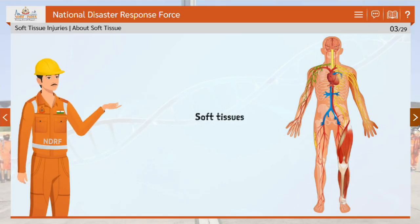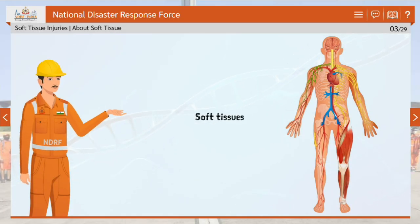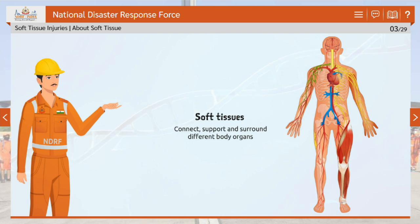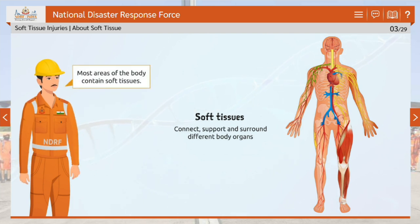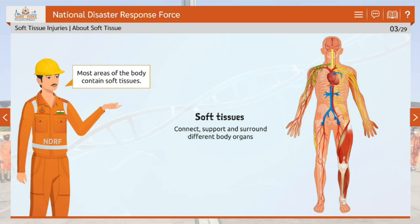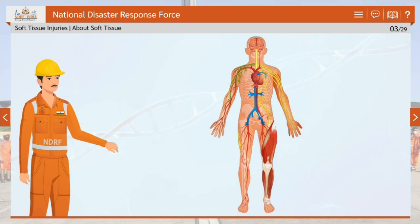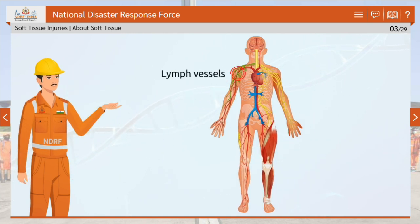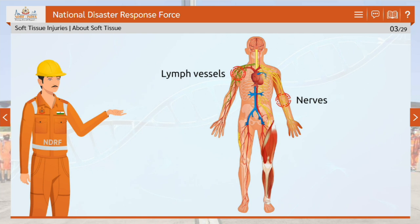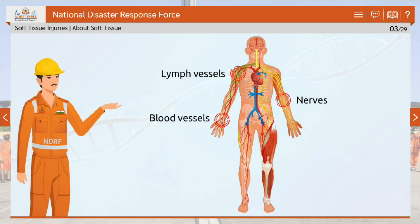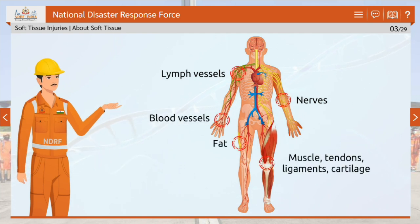Let's understand what soft tissue is. Soft tissues connect, support and surround different body organs. Most areas of the body contain soft tissues. Soft tissues include lymph vessels, nerves, blood vessels, fat, muscle, tendons, ligaments, cartilage and other fibrous tissues.